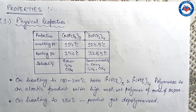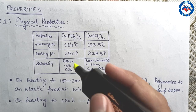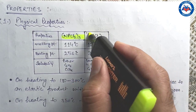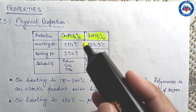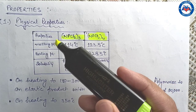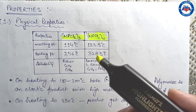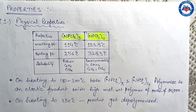Next we have the properties of the cyclic phosphonitrilic halides — such as the cyclic trimers and cyclic tetramers — which have been widely studied. We will discuss the physical properties of these two molecules specifically.